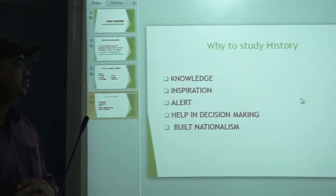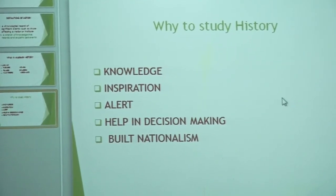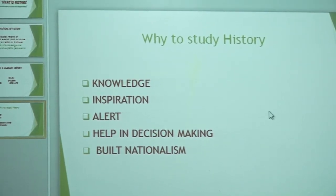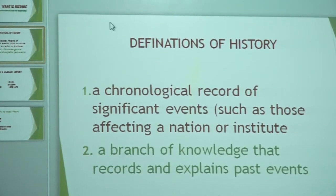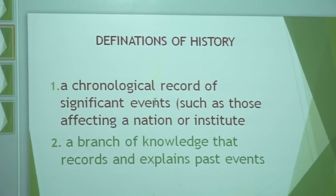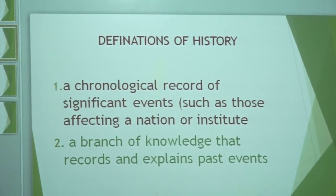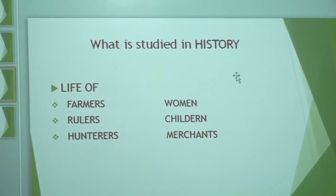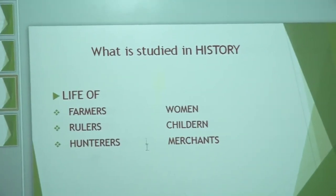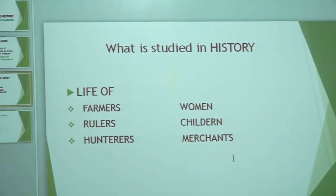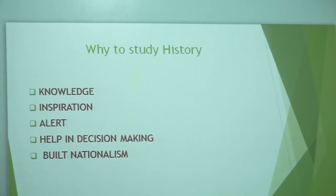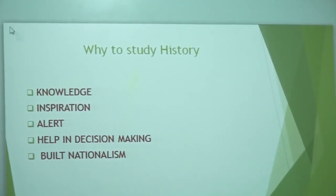So to summarize: we have discussed what is history, the definition of history — history is nothing but a branch of science that studies past events. We studied about whom we study in history: farmers, rulers, hunters, women, children, merchants, and many more people. And lastly, we discussed why we should study history — its importance and advantages. There are also a number of other advantages not discussed in this video. I hope you have understood. Thank you.